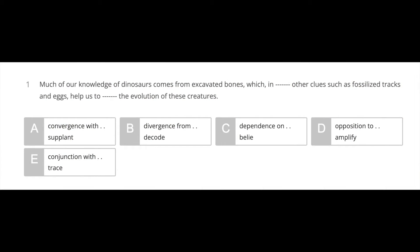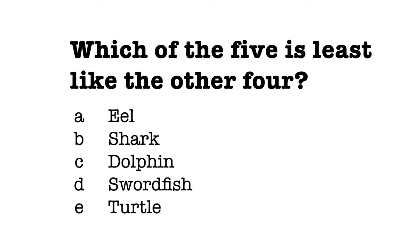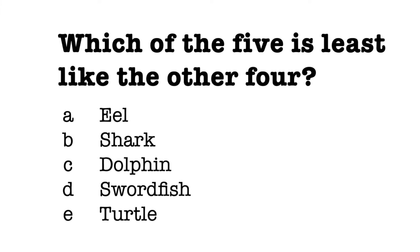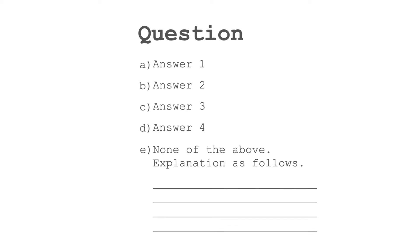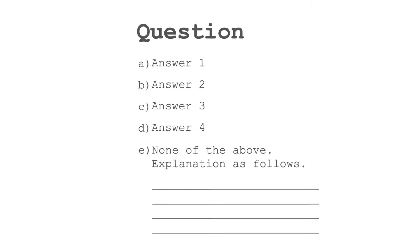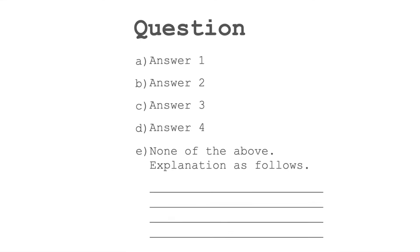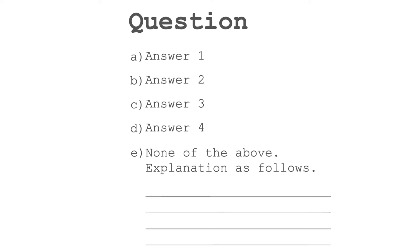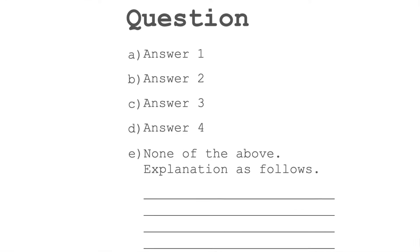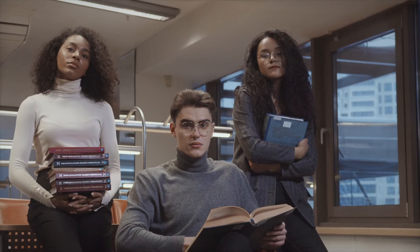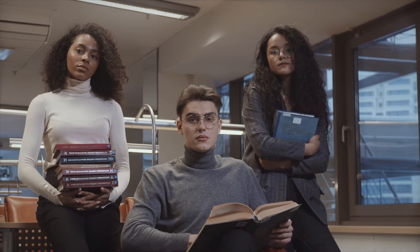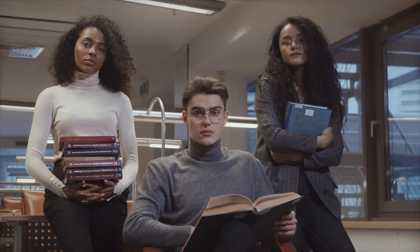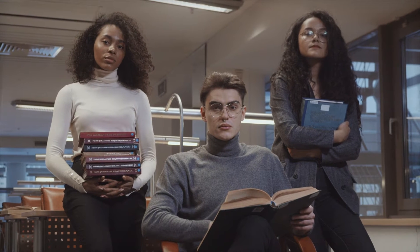Standard IQ tests are always multiple choice. These tests explicitly assume one right answer. Yet there may be more than one right answer, and it's not valid to exclude that possibility. At the very least, multiple choice questions should include a further option — 'none of the above' — combined with space for explanations, but they never do. Therefore, these tests can discriminate against anyone capable of original or higher reasoning. So using multiple choice questions to assess intelligence can be a problem, because these tests can discriminate against the most intelligent people.